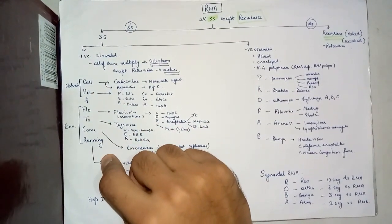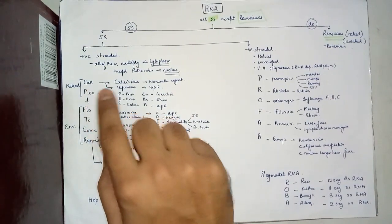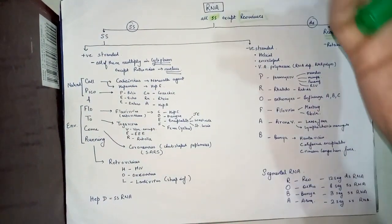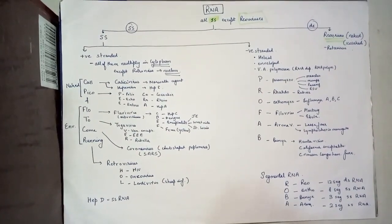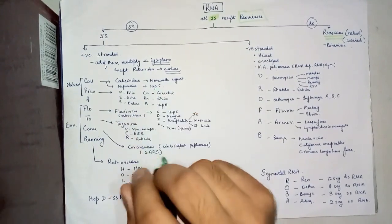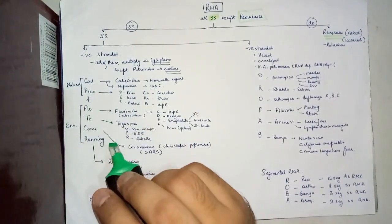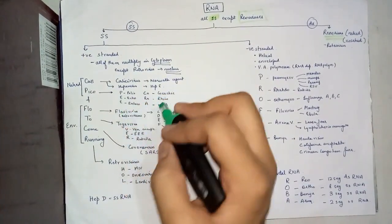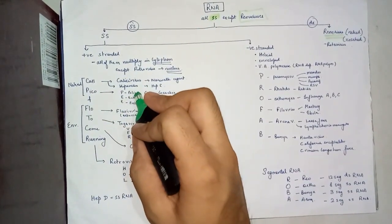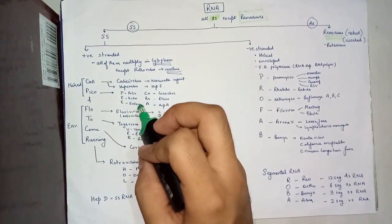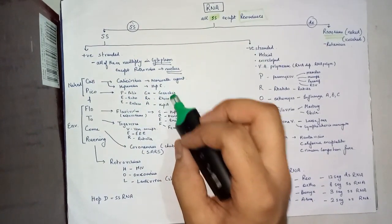Call includes calicivirus, which is the Norwalk agent, the Norwalk virus that causes adult diarrhea, and it also includes hepi virus, which is hepatitis E. Pico includes picornaviruses, and the mnemonic is also Picorna: we have polio, E for echo, another E for enterovirus, co is for coxsackievirus, rn for rhinovirus, and A is for hepatitis A.